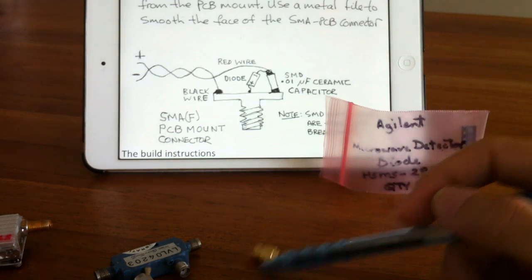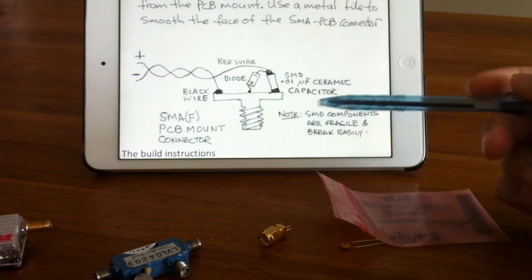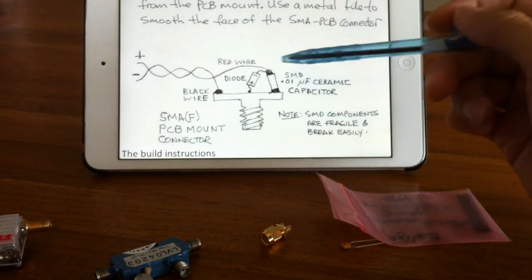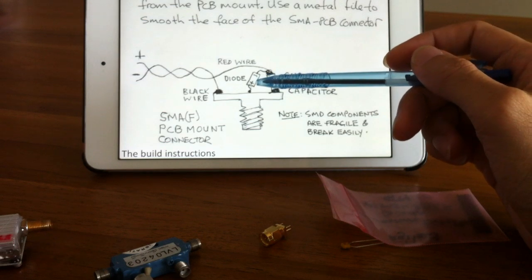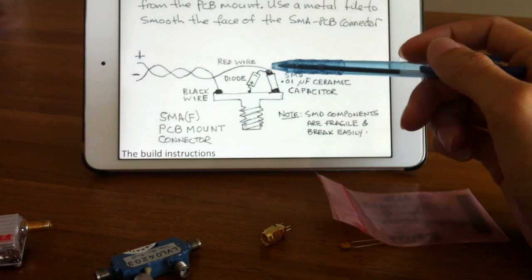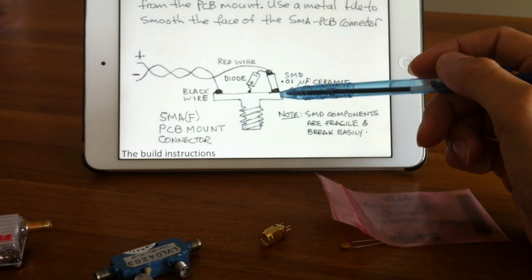You need to hook up the three together as shown in the diagram here. This is the diagram I found on the internet, and basically you need to hook up the positive diode to the signal, and the ground of the diode goes to the ceramic capacitor and down to the ground of the SMA connector.